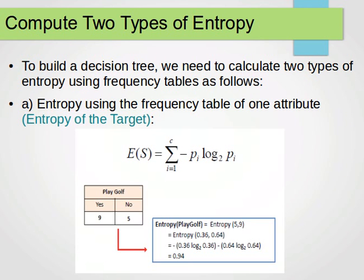To construct a decision tree, we need to compute two types of entropy: entropy of the target before splitting, and entropy after splitting. Then we compute the difference between the two and find the highest information gain. To build a decision tree, we calculate these two types of entropy using frequency tables.